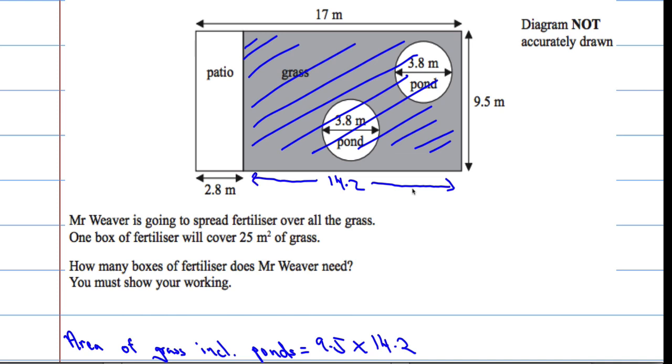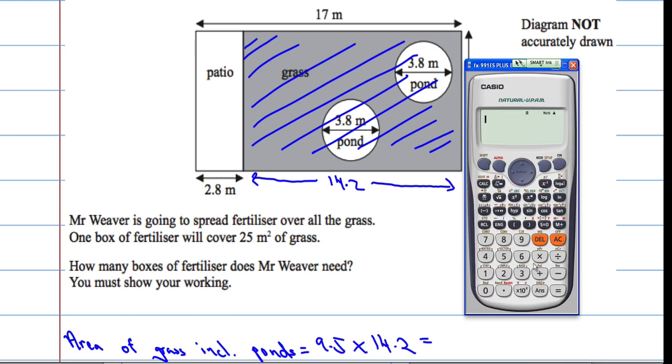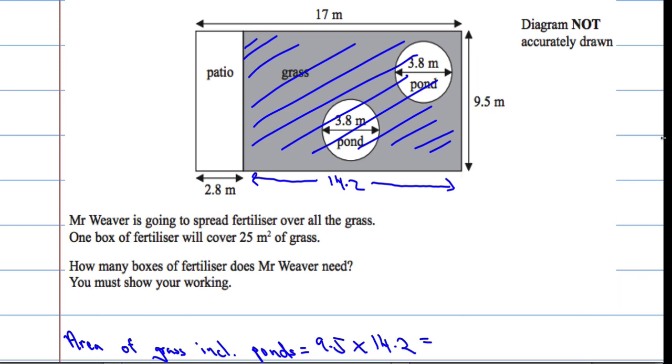Okay, and we don't need to do this calculation by hand. Take out the trusty calculator. 9.5 times 14.2 is 134.9. And that's in metres squared.